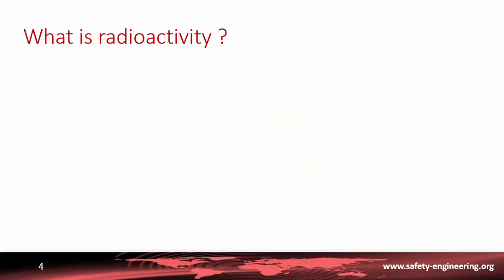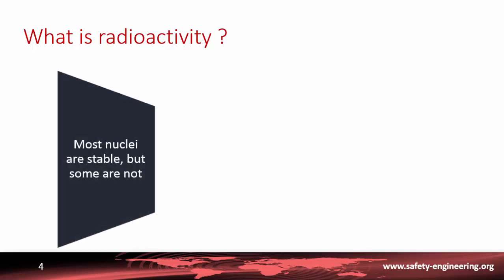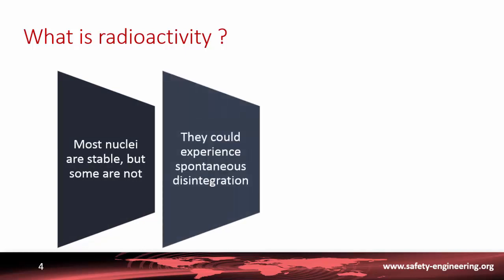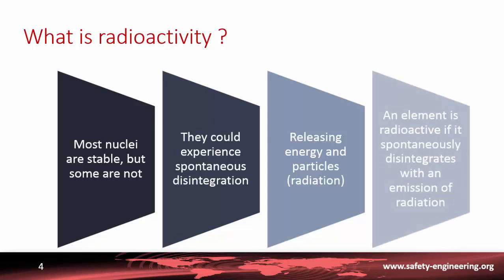Let's define now the concept of radioactivity. Most nuclei are stable, but some are not. For some nuclei, there is a probability of spontaneous disintegration. That means that their structure suddenly changes to reach a stable form, with a modification of mass and hence an exchange of energy with the environment. This takes the form of radiation emission, which is a characteristic of radioactive substances.